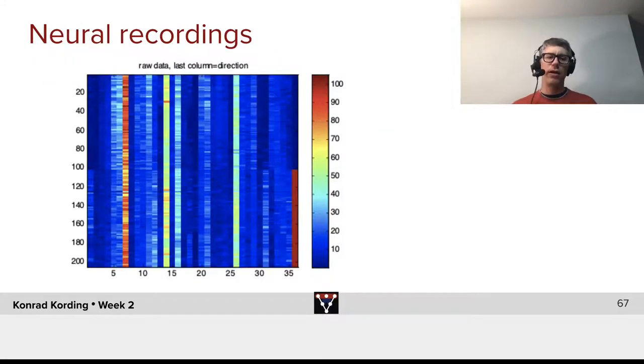How will the data look like for those things? Here, it's just an example for giving you the flavor for that. On the x-axis, we have 35 neurons.